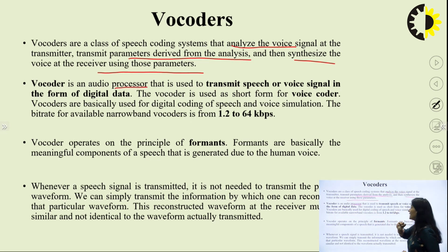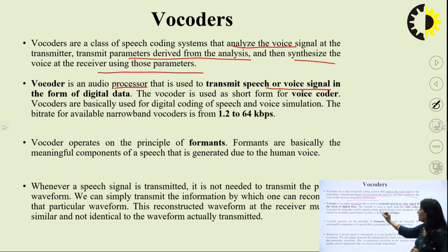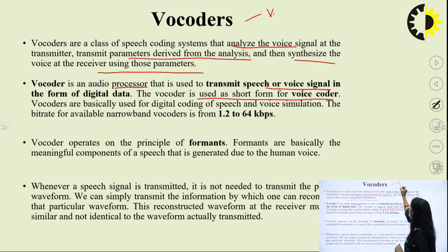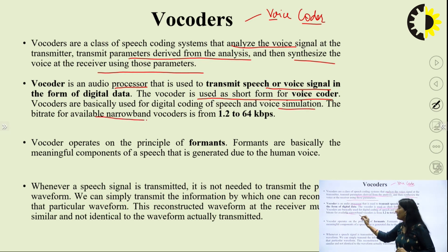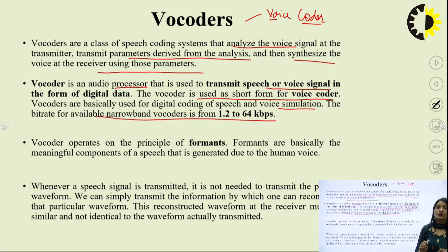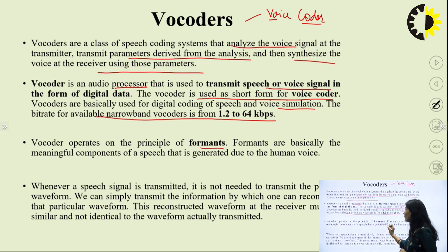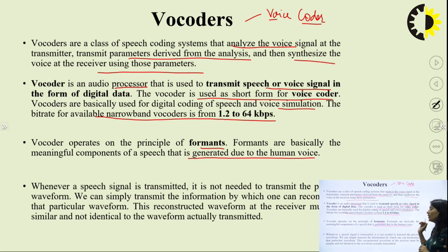Vocoder is an audio processor used to transmit speech or voice signal in the form of digital data. Vocoder is short for voice coder. Vocoders are basically used for digital coding of speech and voice simulation. The bit rate for available narrowband vocoders is from 1.2 to 64 kbps. Vocoder operates on the principle of formants, which are the meaningful components of speech generated during human voice.